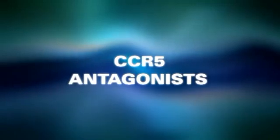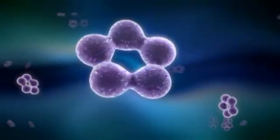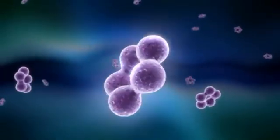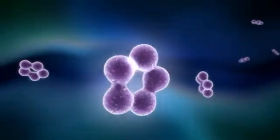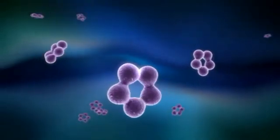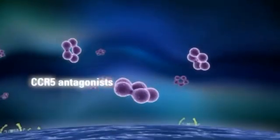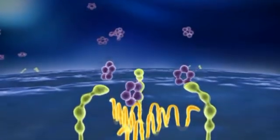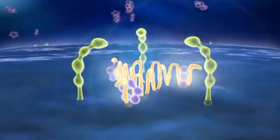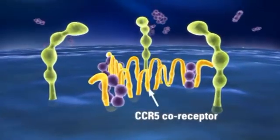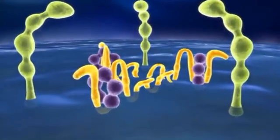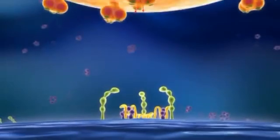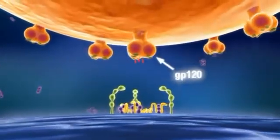The discovery of the Delta 32 mutation in the CCR5 gene led to the development of a new class of drugs that target the CCR5 co-receptor to stop HIV infection by blocking viral entry. Known as CCR5 antagonists, this new class of anti-HIV agents functions by binding to the CCR5 co-receptor on the surface of CD4 T cells. Binding of the co-receptor by a CCR5 antagonist causes conformational changes in the co-receptor, rendering it unable to bind to GP120 and complete the entry process.